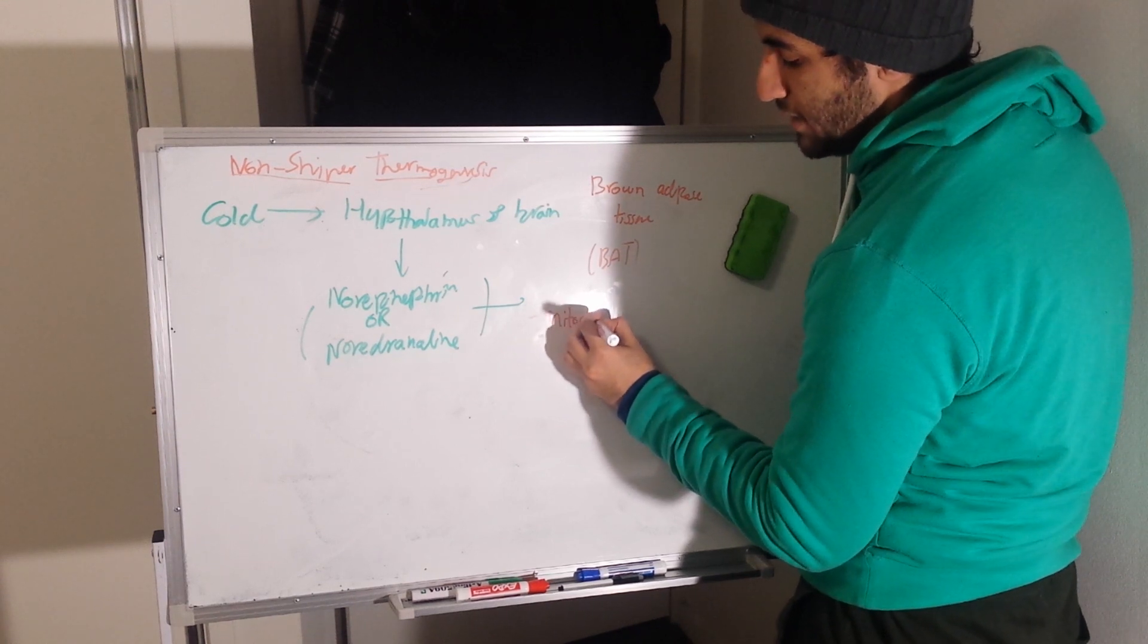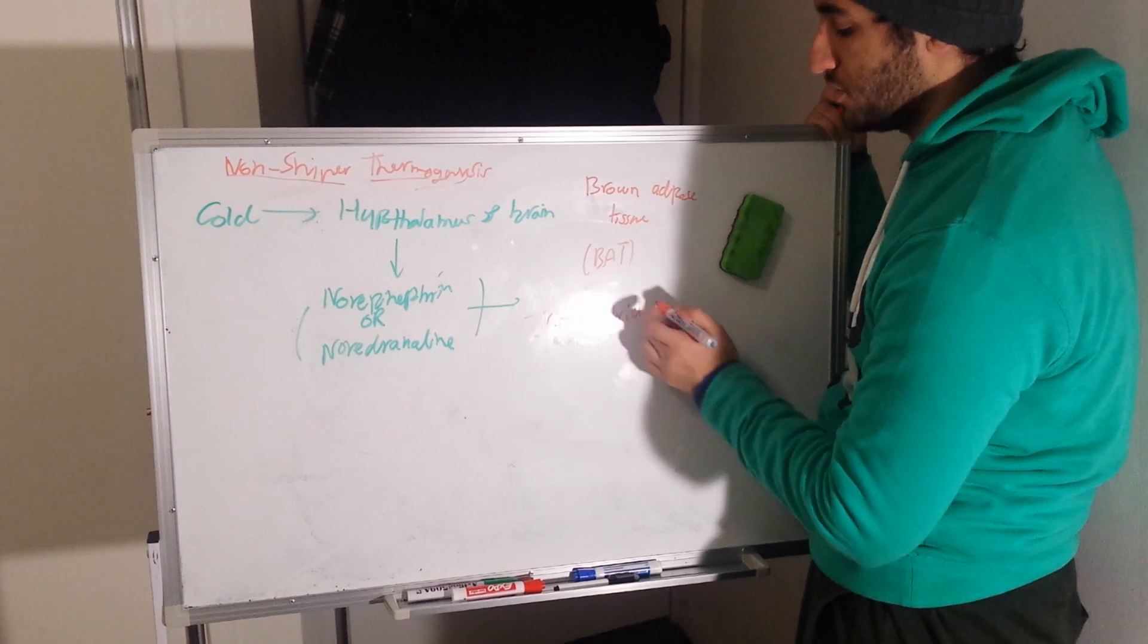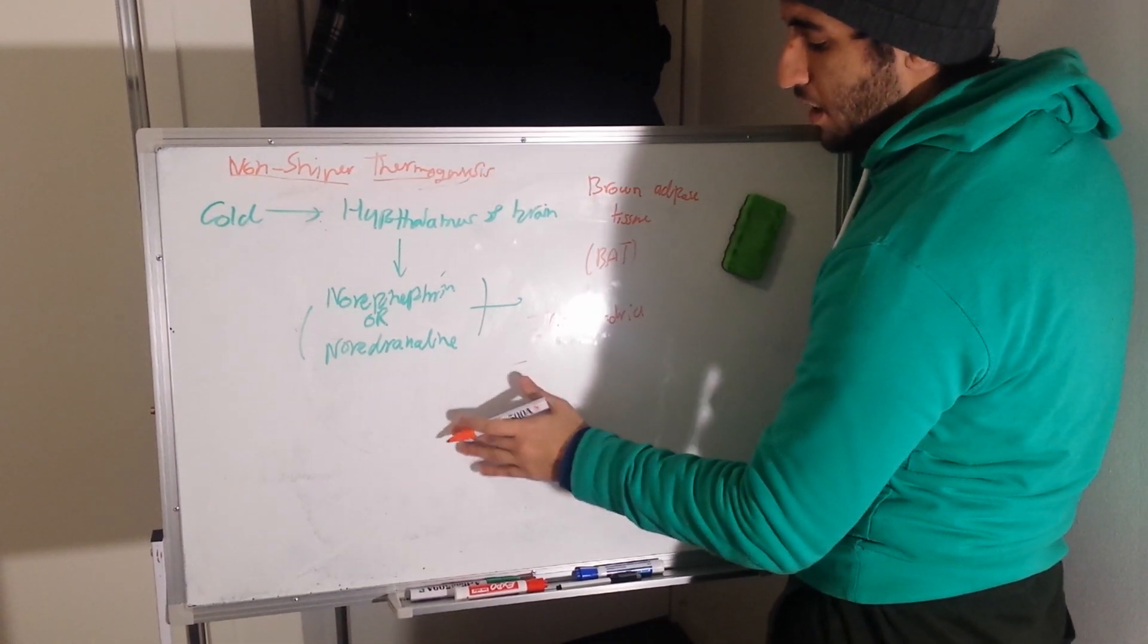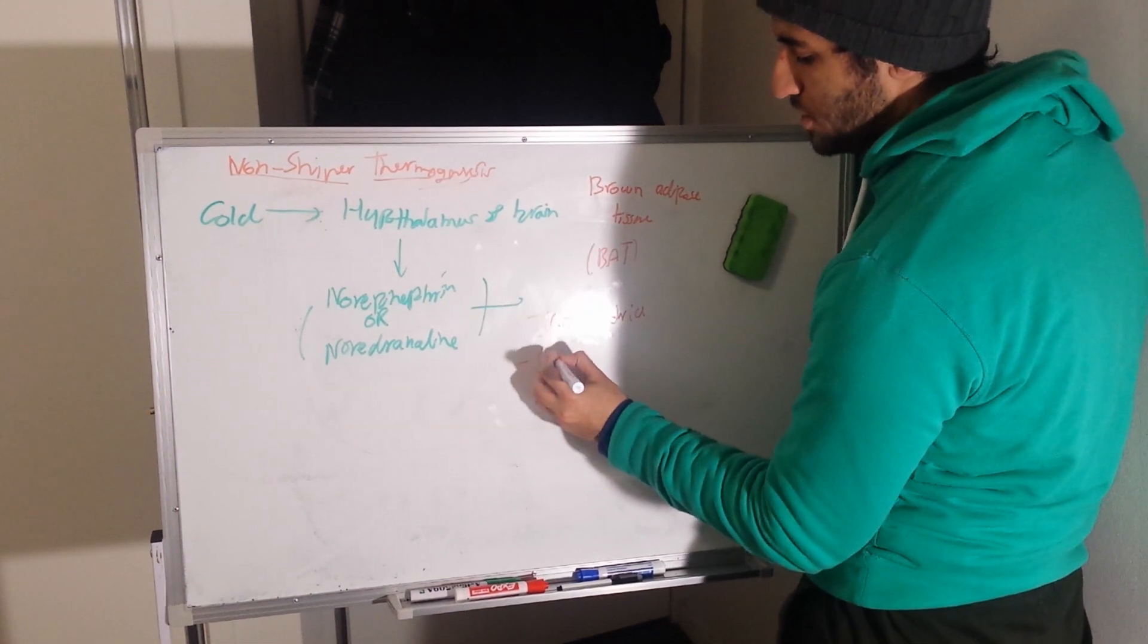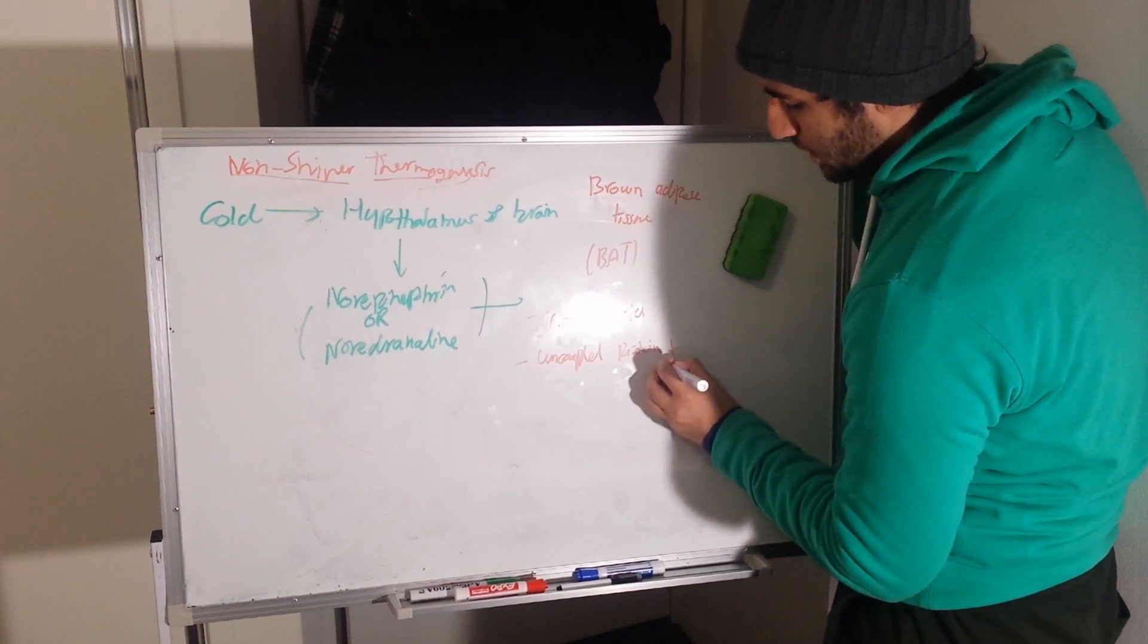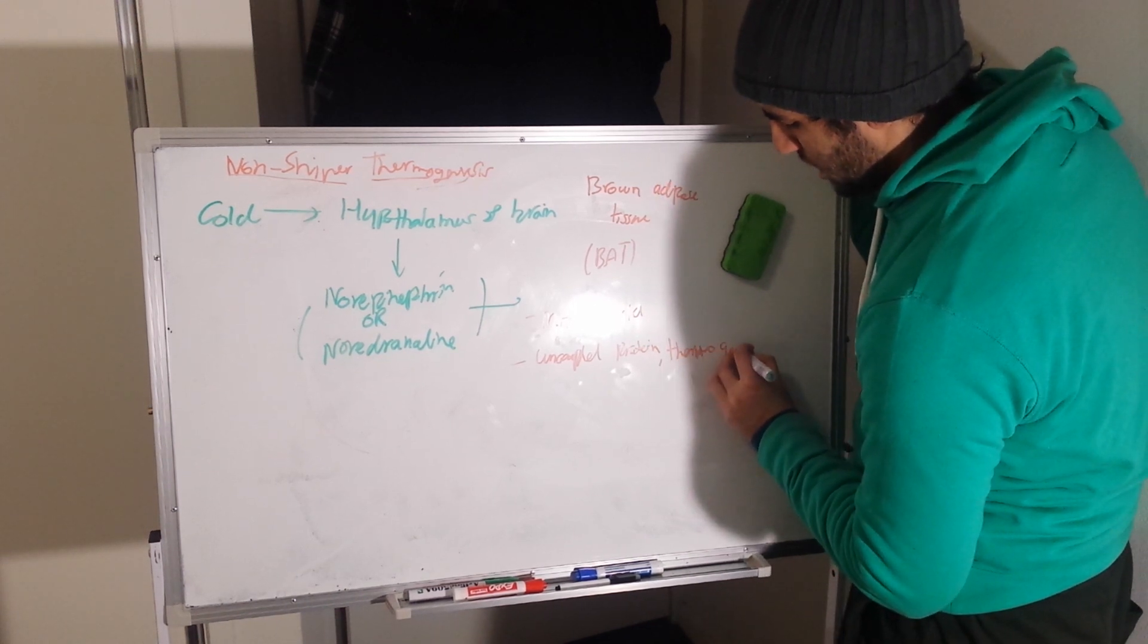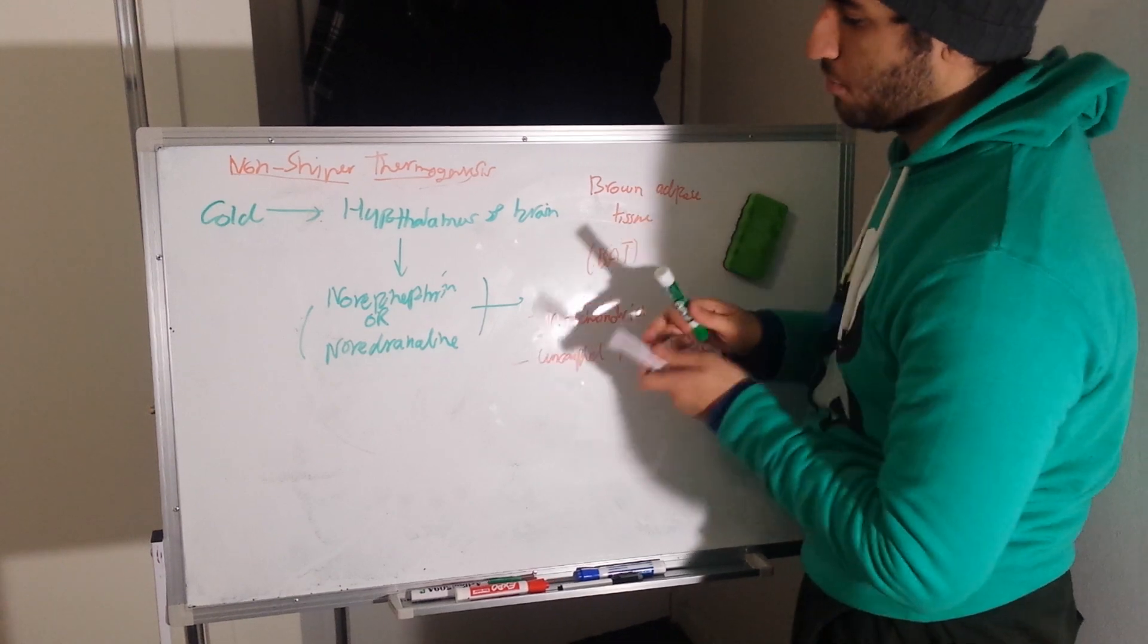We're going to discuss why this is the case and why this is important. There's a plentiful amount of mitochondria in these cells, hence the result of calling them brown. Also there are some uncoupled proteins here as well. We're going to discuss this soon. So presence of uncoupled protein called thermogenin.